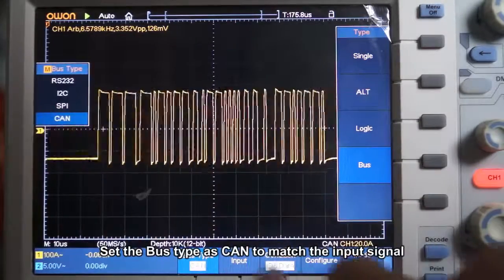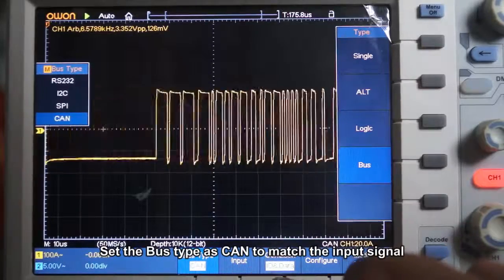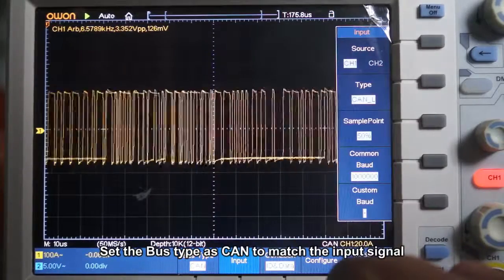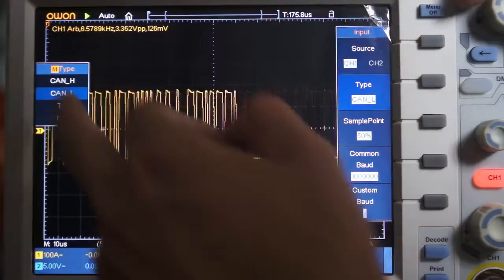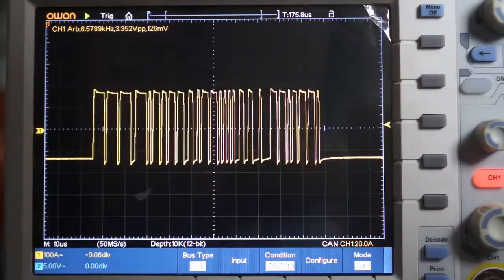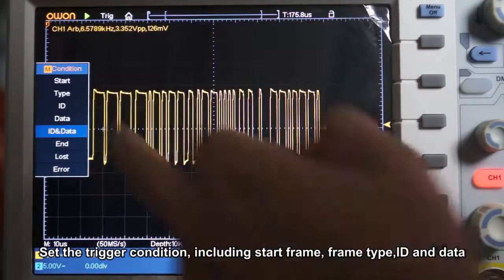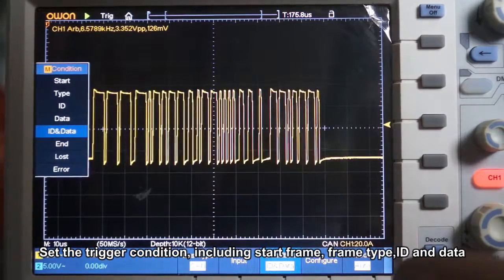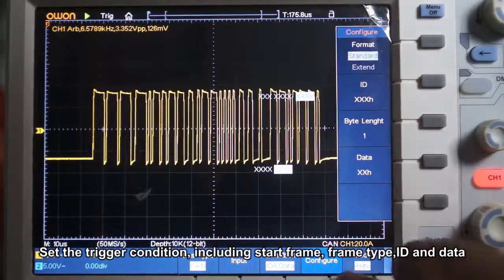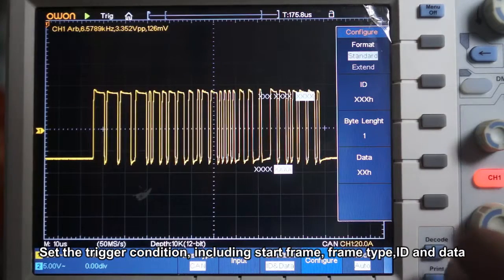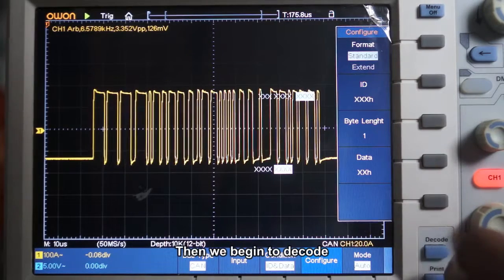Set bus type as CAN to match the input signal. Set Trigger Condition, including start frame, frame type, ID and data. Then, we begin to decode.